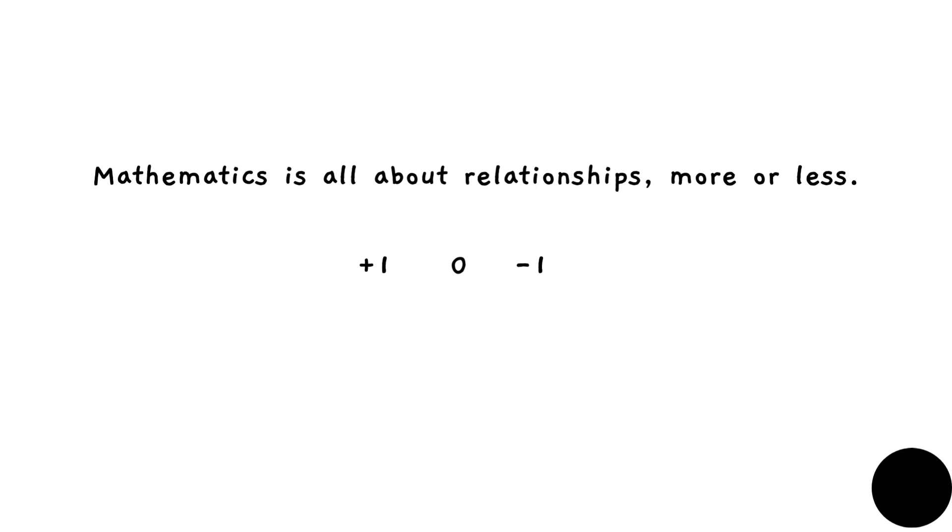Now plus one could be a guy who has money. Zero could be a guy who has no money, and minus one is worse. He not only has no money, but he is in debt, or he had money before and he got robbed so his money was taken away from him. So that's how these three numbers can be related to each other.